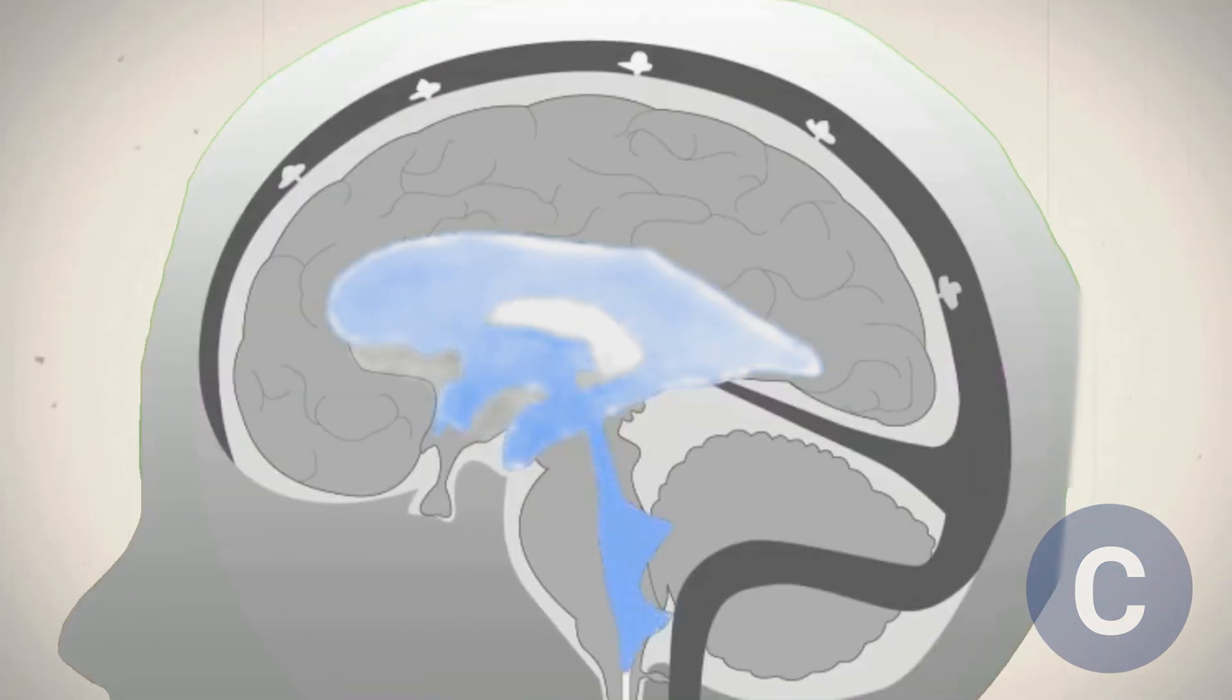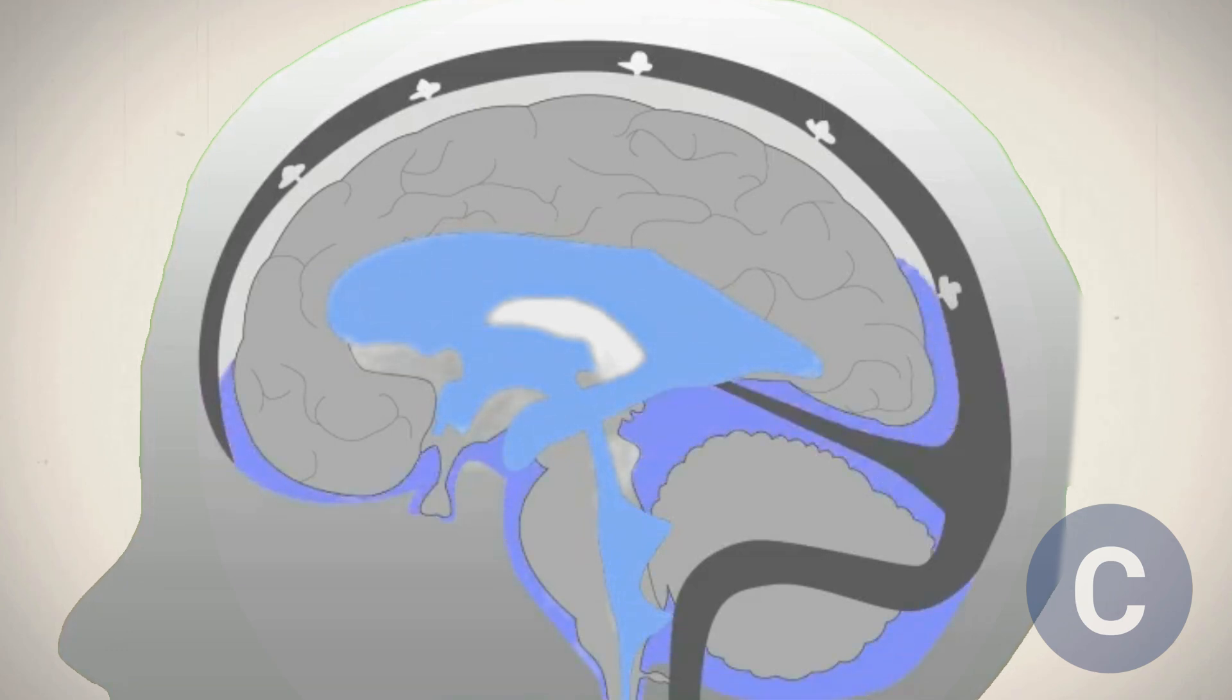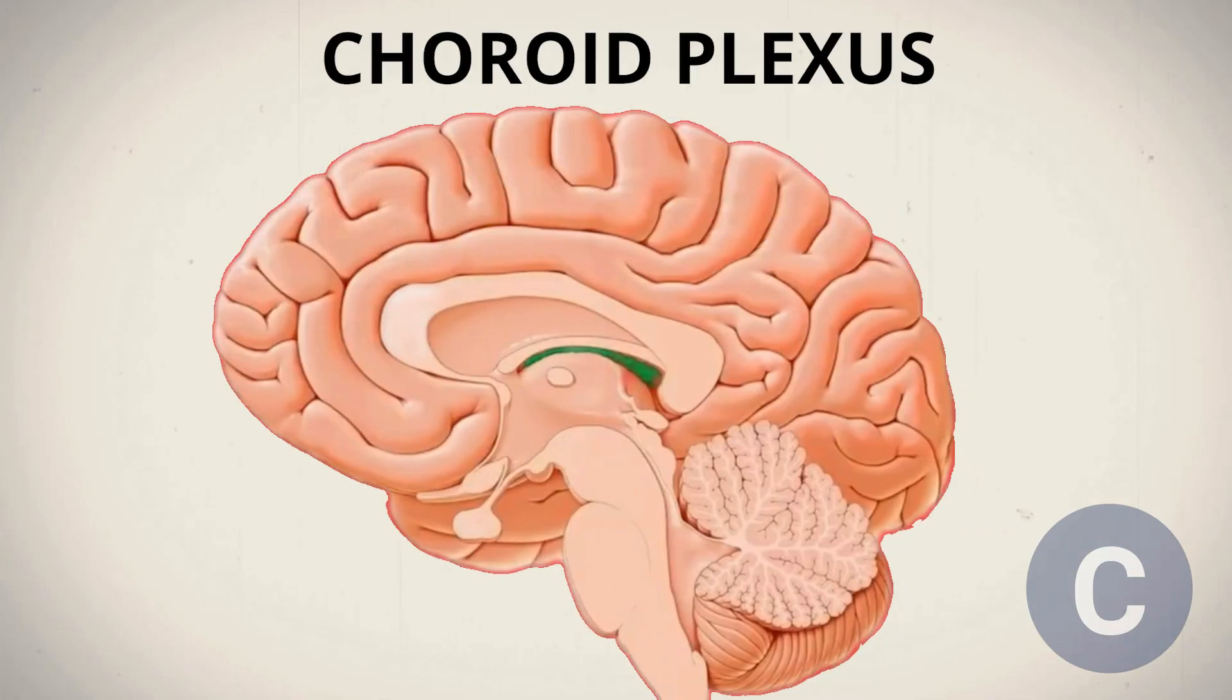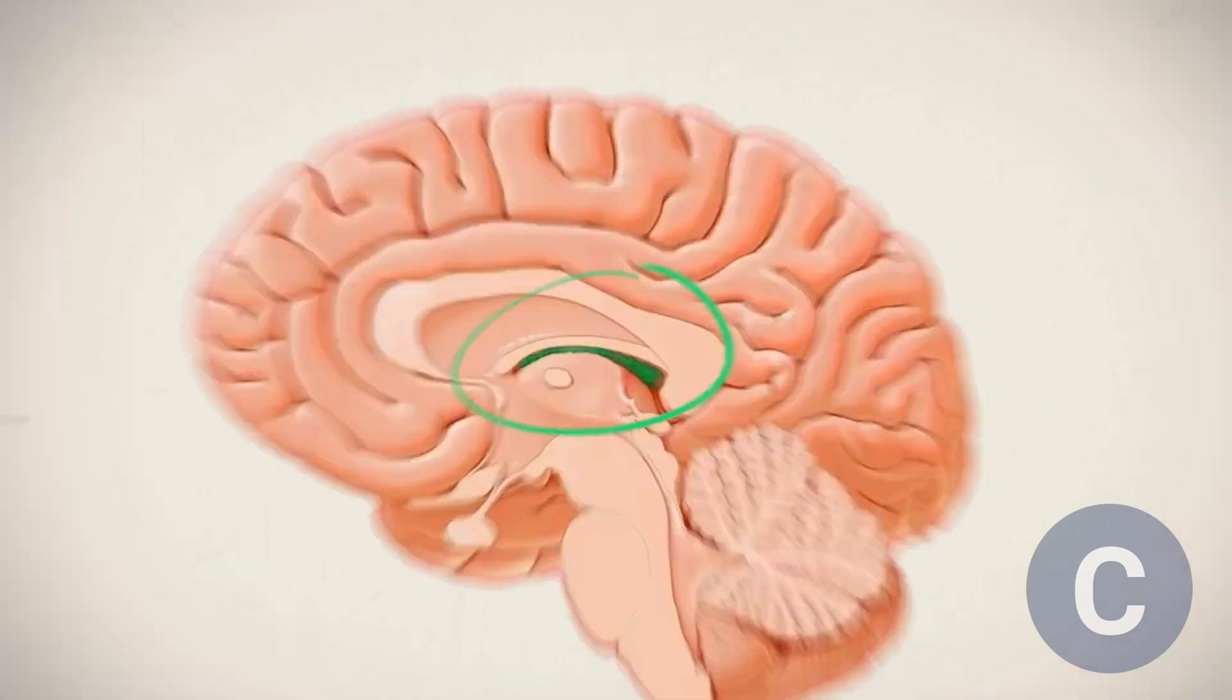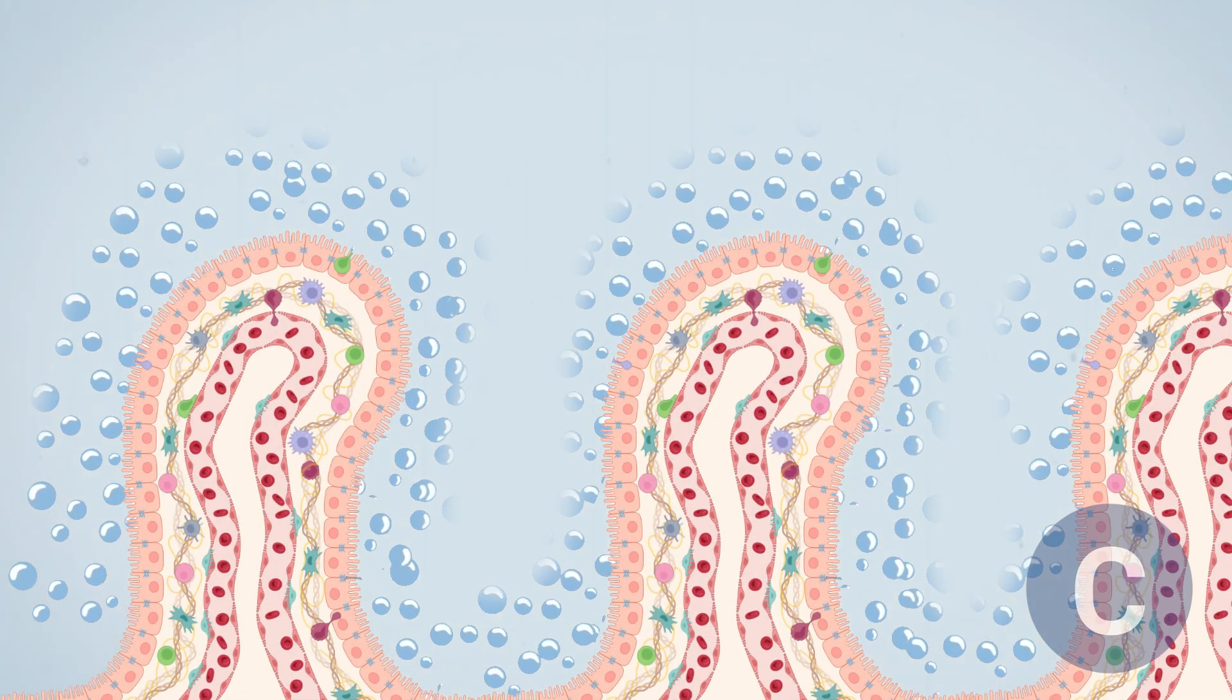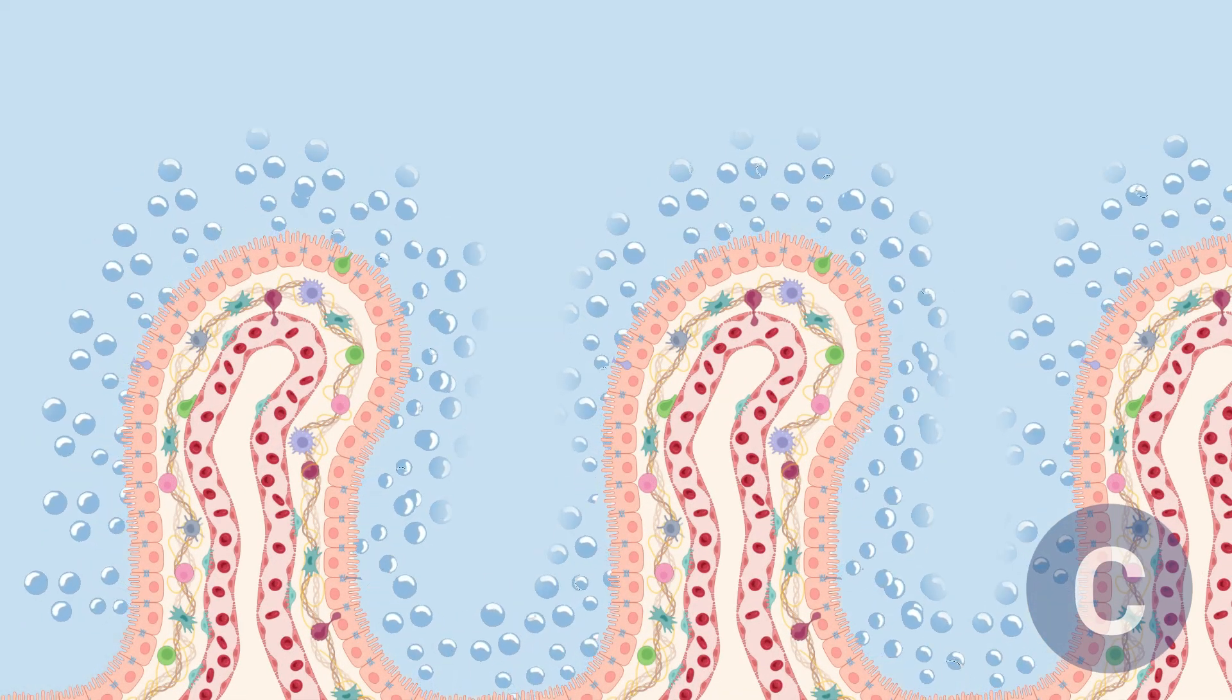Cerebrospinal fluid is a clear liquid that surrounds the brain and spinal cord. It protects the brain from injury and helps with the exchange of certain substances with the blood. It's mostly produced by the choroid plexuses, which are structures inside the brain's ventricles. The fluid is released continuously, allowing it to flow throughout the central nervous system.